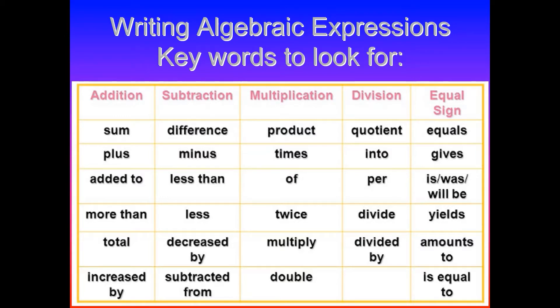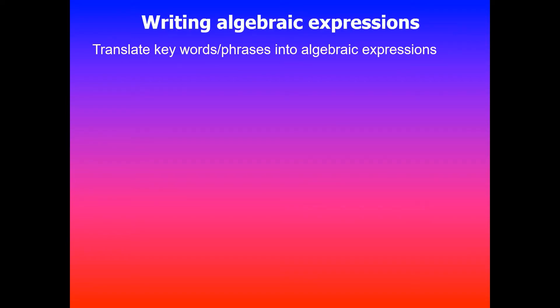We'll look at some examples using those keywords and translating them into algebraic expressions. First example: three more than a number. In this case, a number is unknown, so we can take any variable or letter to denote that number. In this case, I have chosen letter n, so three more than a number will mean n plus 3.